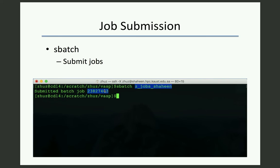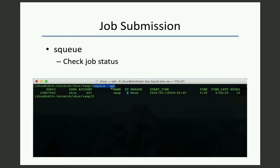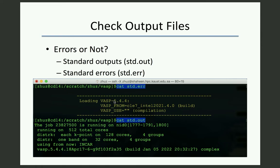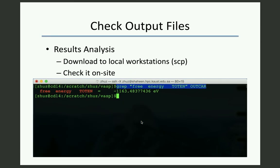After job submission, you will get an ID for the job. If you do squeue --me, you will see the status of your own jobs — you can see the job is running. If you want to cancel the job, find the job ID and use the scancel command followed by the job ID. Then the job will be cancelled, and if you do squeue --me again, you will see that the job is gone. After the job finishes, you can check for any errors by looking at the standard error file and the standard output file. If the job finishes successfully, you can do post-processing on the results.